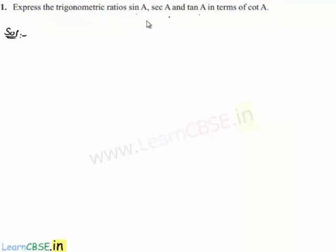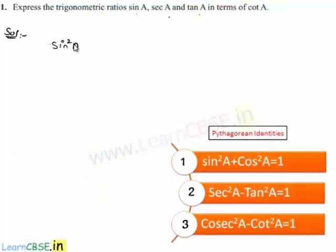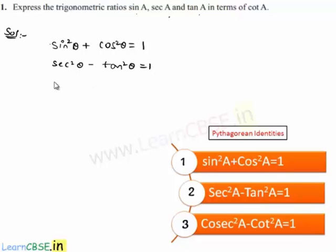In order to express one trigonometric ratio in terms of another, we have three identities: sin²θ + cos²θ = 1; sec²θ - tan²θ = 1; and cosec²θ - cot²θ = 1. By using these three identities, we can convert one trigonometric ratio into another.